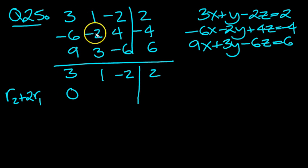That plus 2 of those, minus 2 plus 2 is 0. That plus 2 of those is 0. And that plus 2 of those is 0. Because you've got minus 4 plus 4.